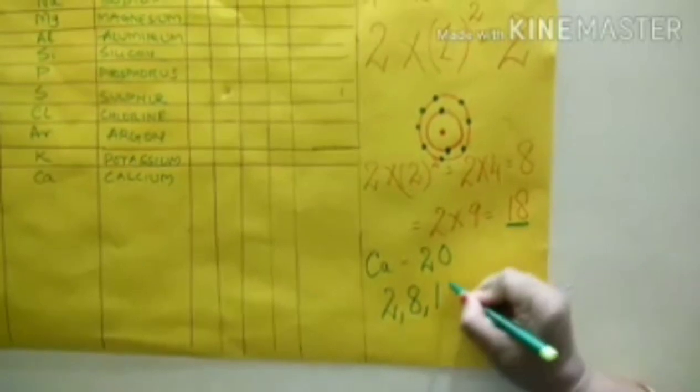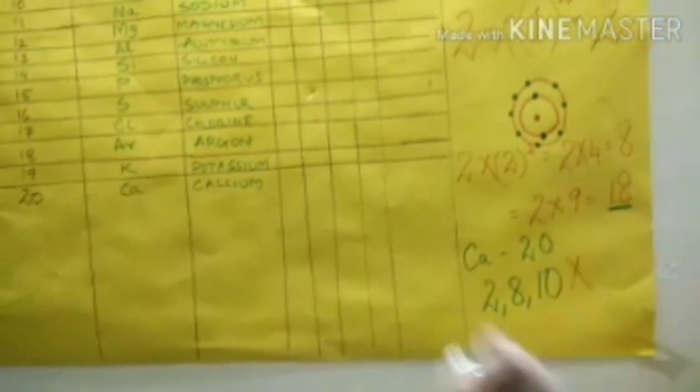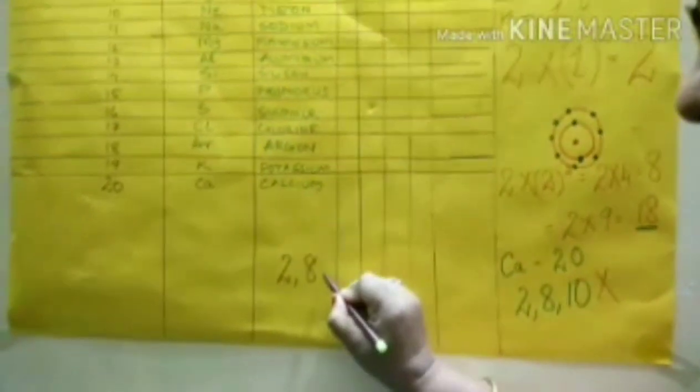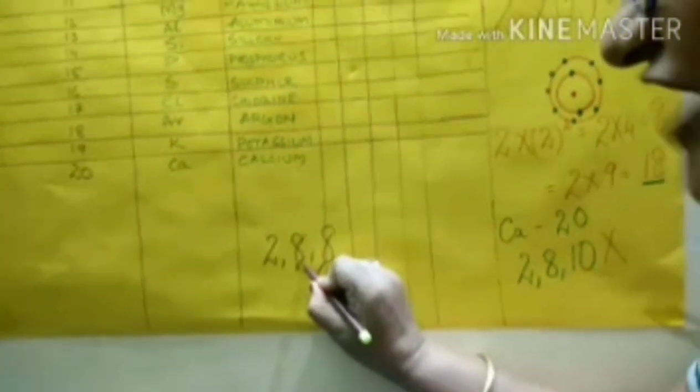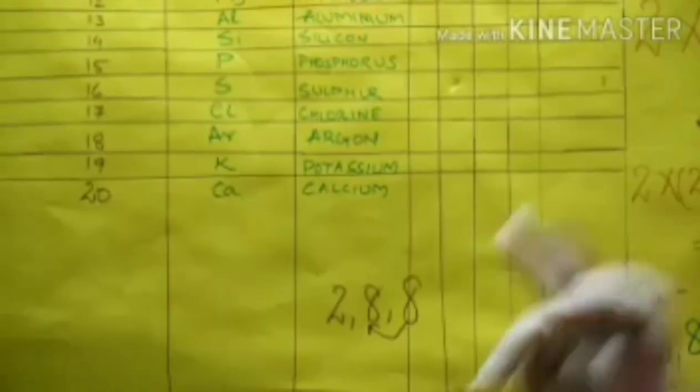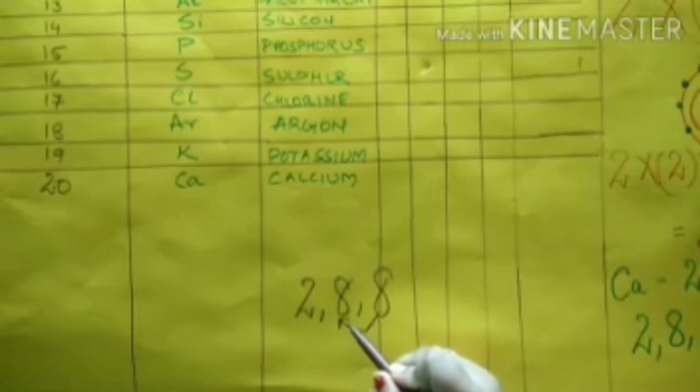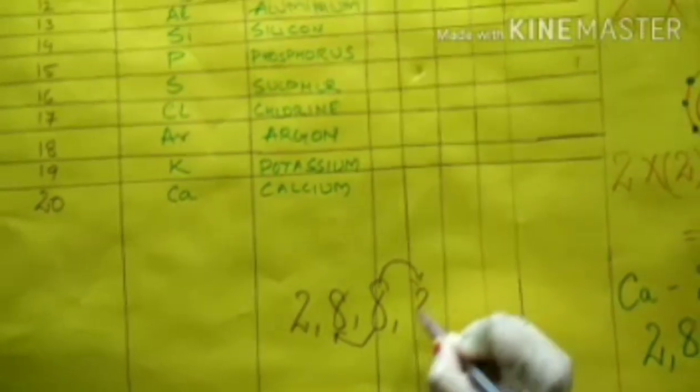Now the question arises, 8 plus 2 is 10 and the third shell has a accommodation part of 18. So why you are not writing 10 here? It is wrong children. If I put 10 here it is wrong. Here is a rule comes over here. That rule says 2-8-8 rule. Kya rule hota hai? 2-8-8 rule. Means if the third shell has a capability of 18, it will take 18 or 8, not 19, not 17, not 16. If the third shell has been filled with 8, and now 2 more left, so they will shift to the next shell, that is 2 over here.